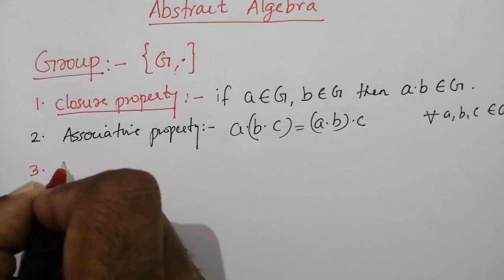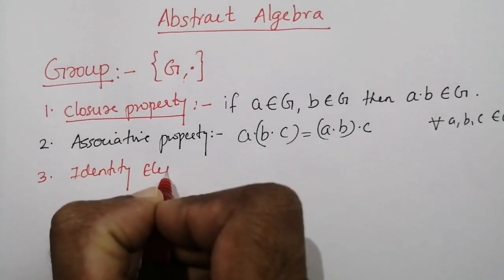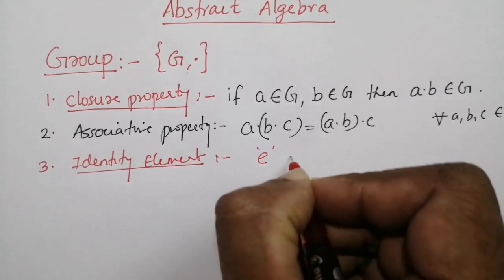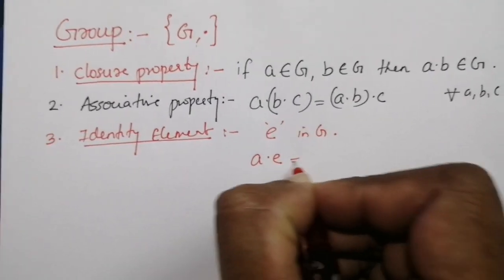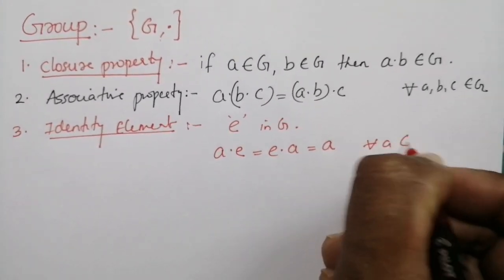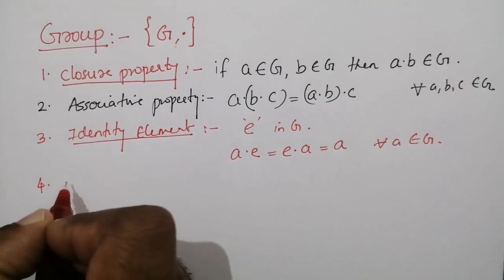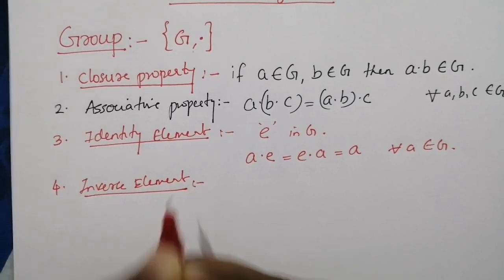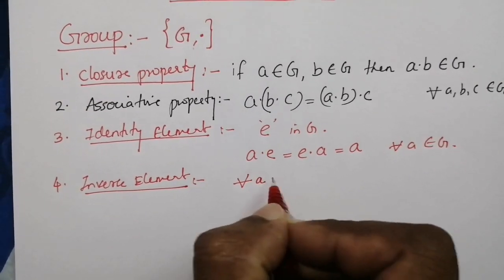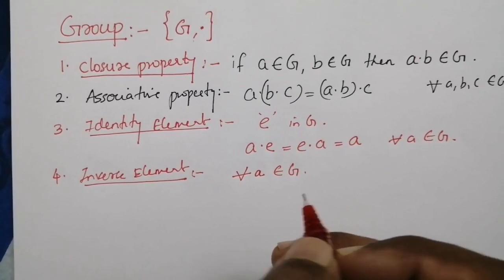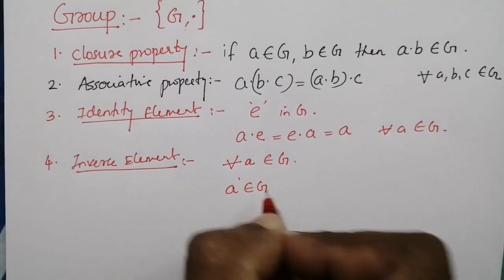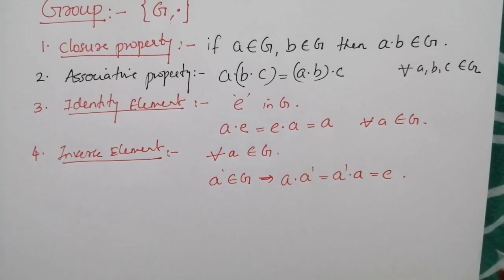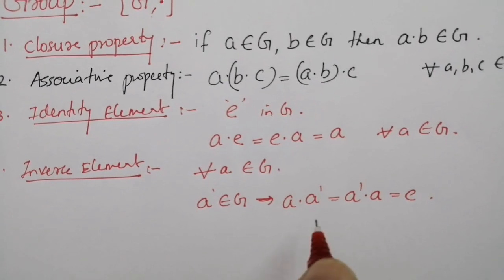The third property is the existence of an identity element. There is an element e in G such that a·e = e·a = a, for all a belonging to G. The fourth property is the existence of an inverse element. For every element a belonging to G, there is an element a' in G such that a·a' = a'·a = e. That is, if you associate each element with its inverse, you will get the identity element.